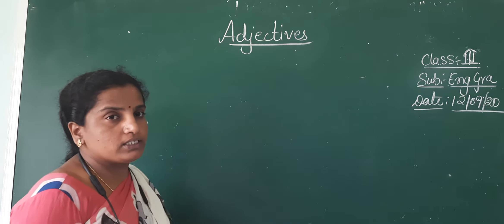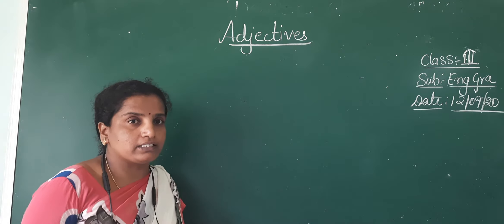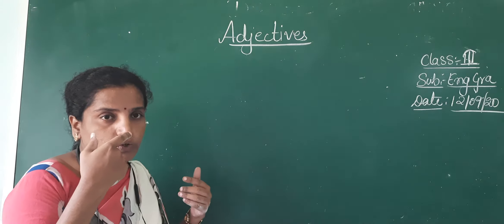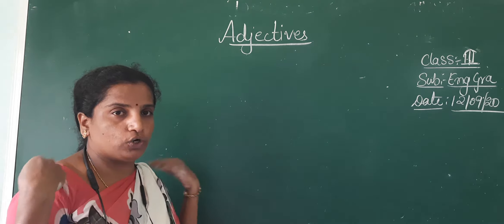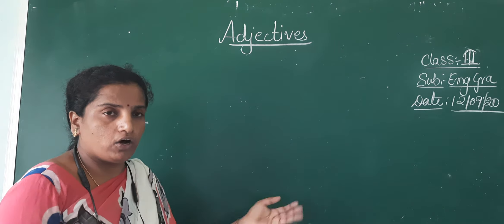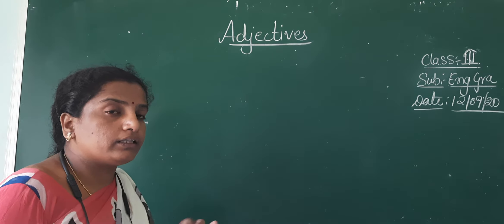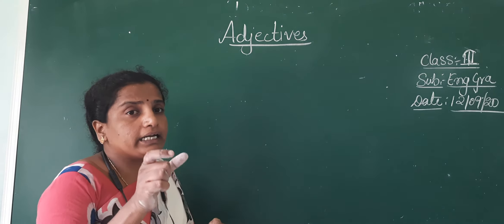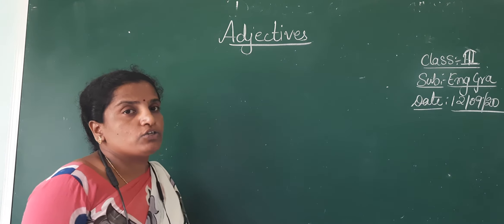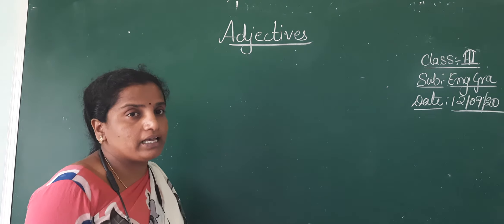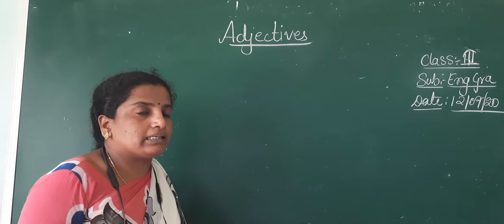Suppose our body has parts. What are the body parts? Eyes, nose, mouth, hands, legs, stomach, shoulder, arms — all. These are our body parts. In the same way, the words which we are speaking to express our thoughts and feelings are divided into some parts.